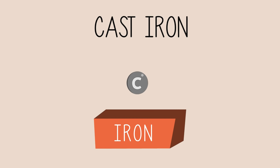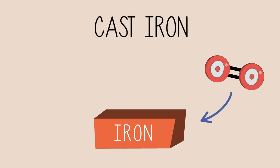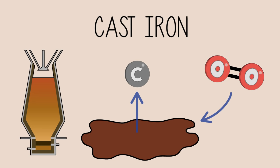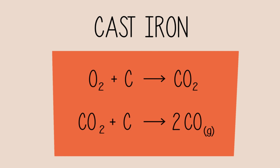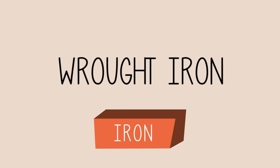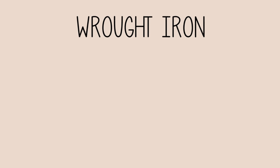The carbon content of cast iron can be removed if we blow oxygen into molten cast iron fresh from the blast furnace. The oxygen reacts with carbon to create carbon monoxide, which can be reused in the extraction process. If we remove almost all the carbon in cast iron, we get wrought iron.